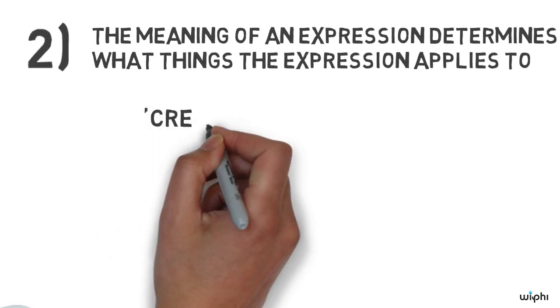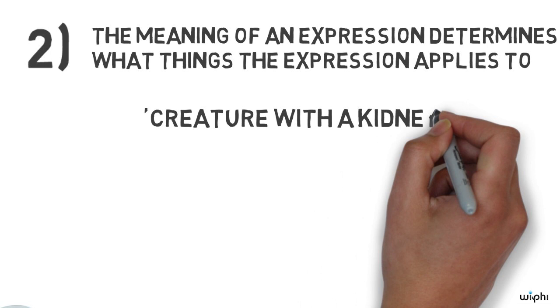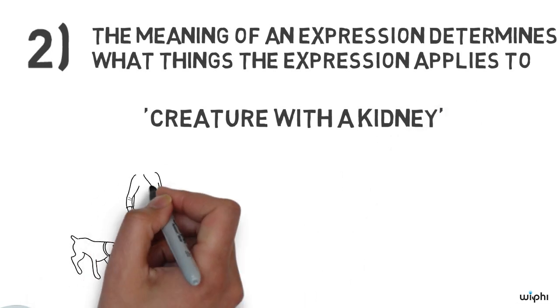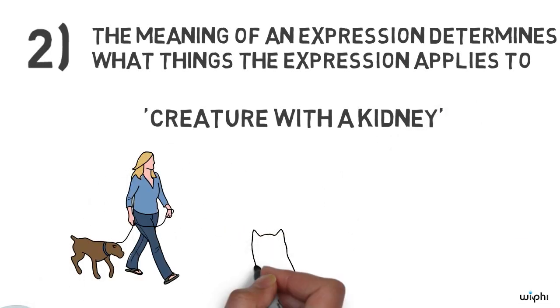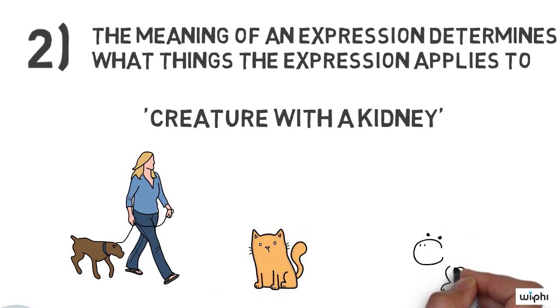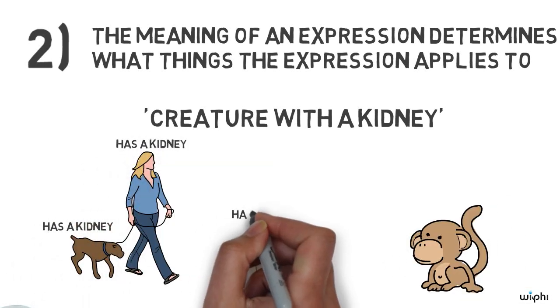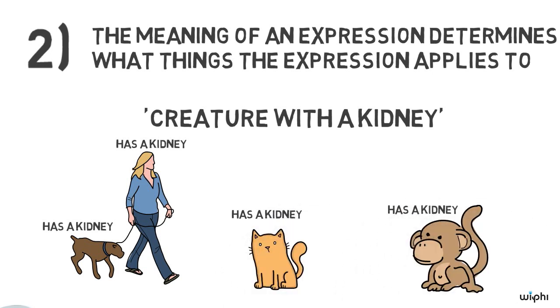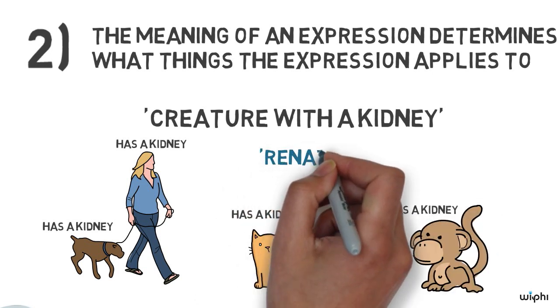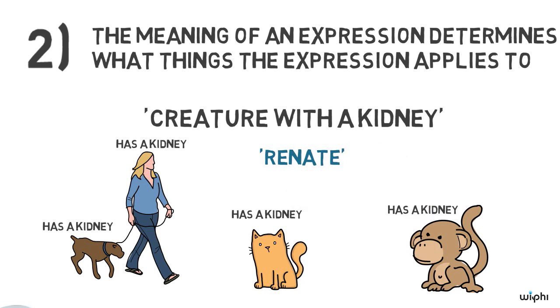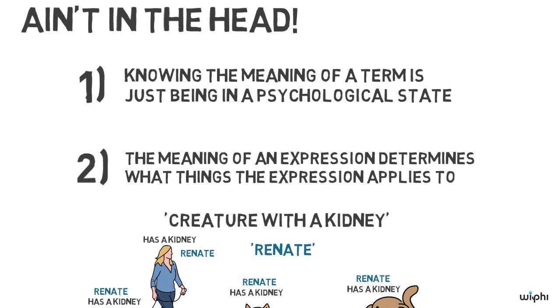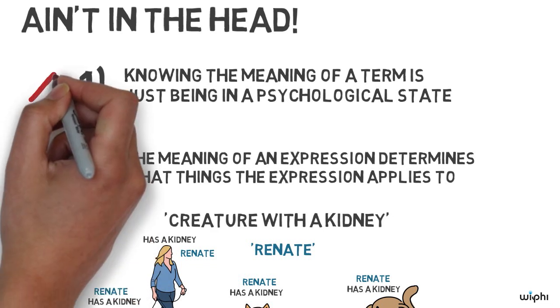The second condition is that the meaning of an expression determines what things the expression applies to. For example, the meaning of this expression, creature with a kidney, determines a certain group of things that have kidneys. You're one of those things, I'm one of those things, my dog is one of those things, and lots of other creatures. Every other creature with a kidney. Any expression with the same meaning as creature with a kidney will apply to all those same things. So for example, renate means creature with a kidney, so renate and creature with a kidney apply to exactly the same things. You, me, my dog, and so on. Putnam accepts this second condition, but argues that the first must be rejected.